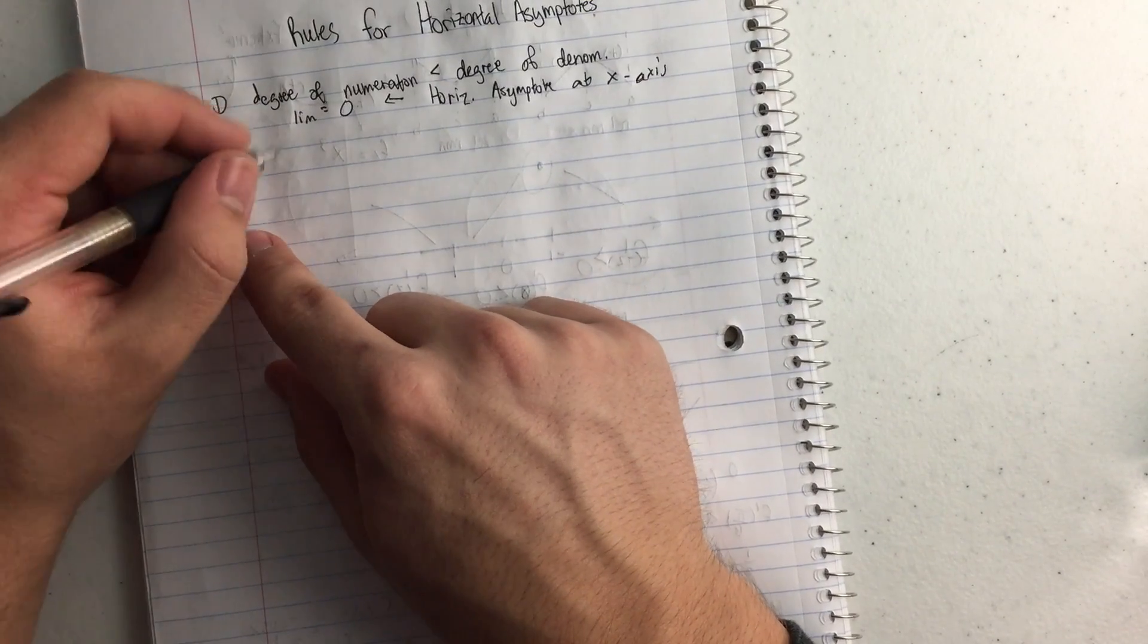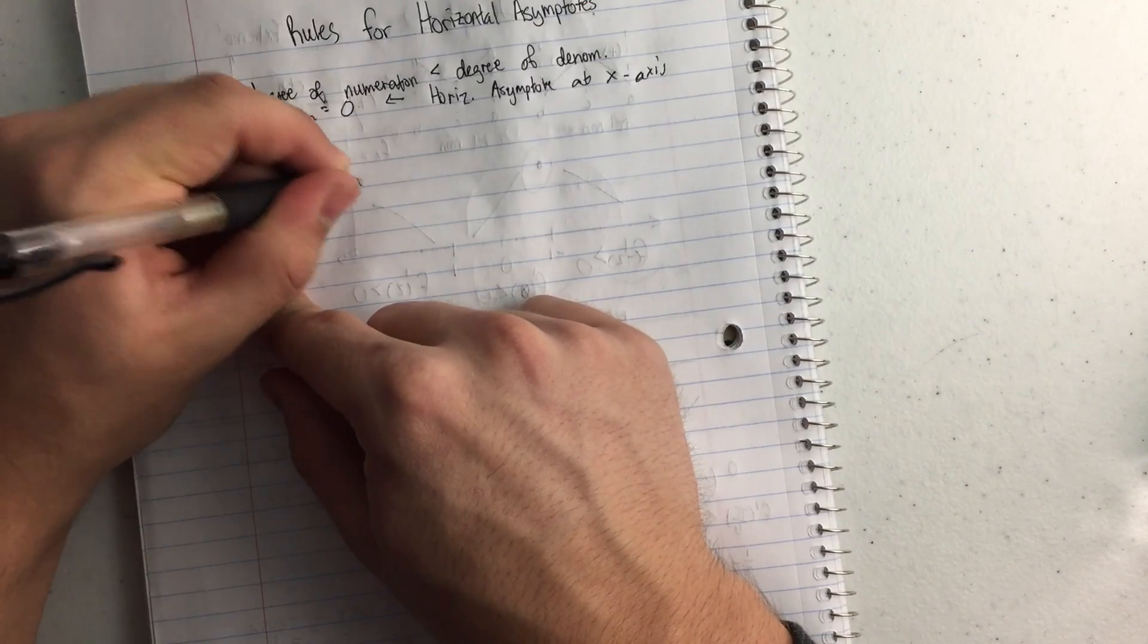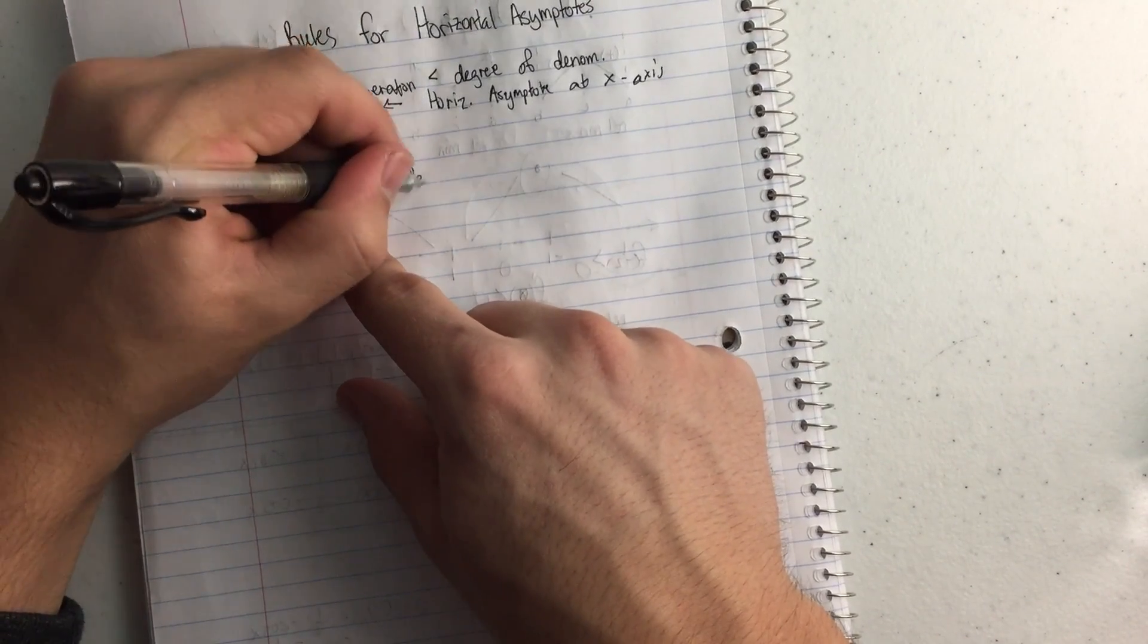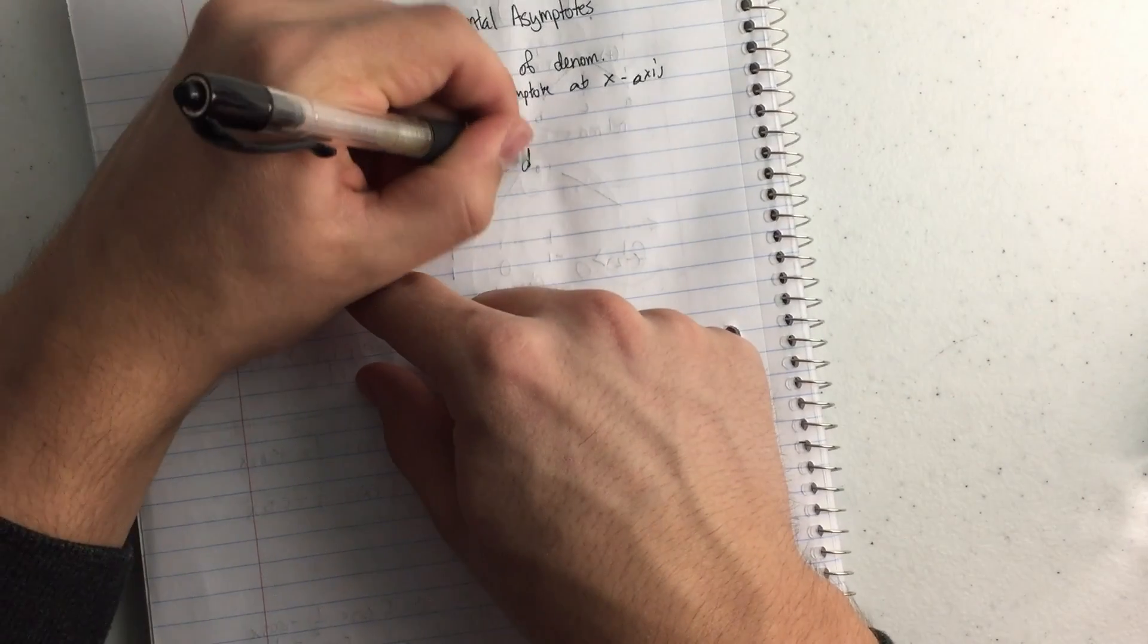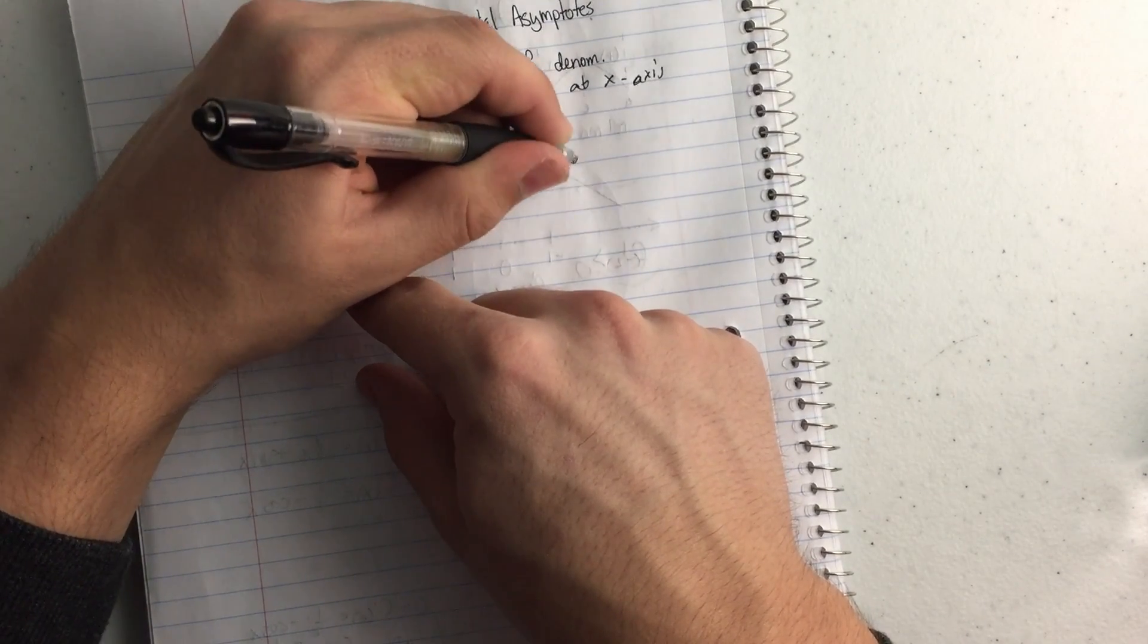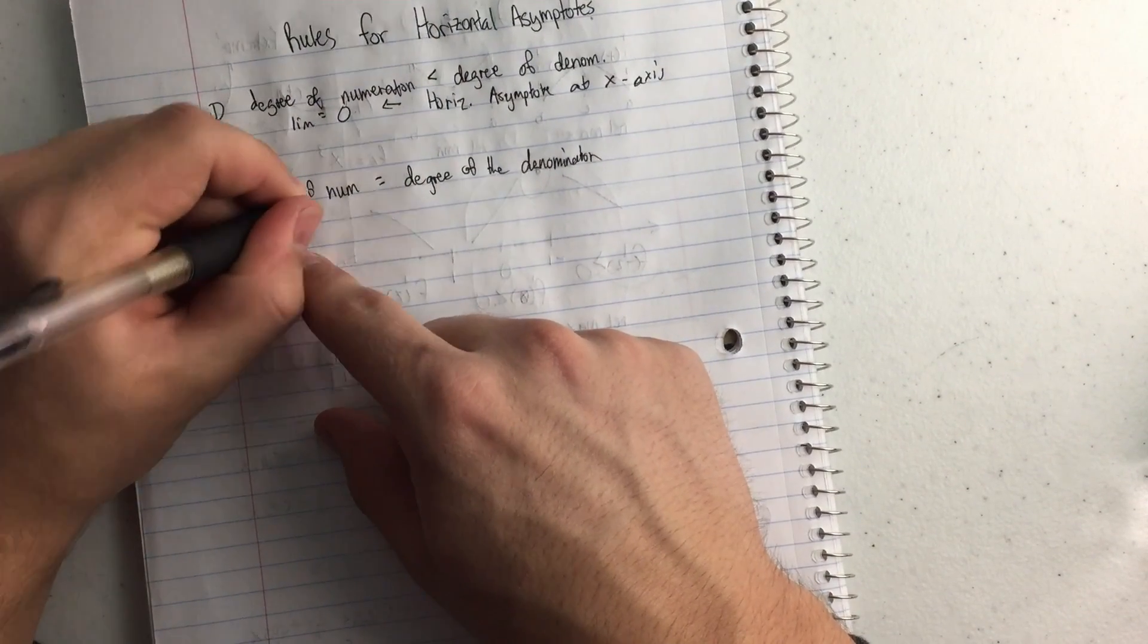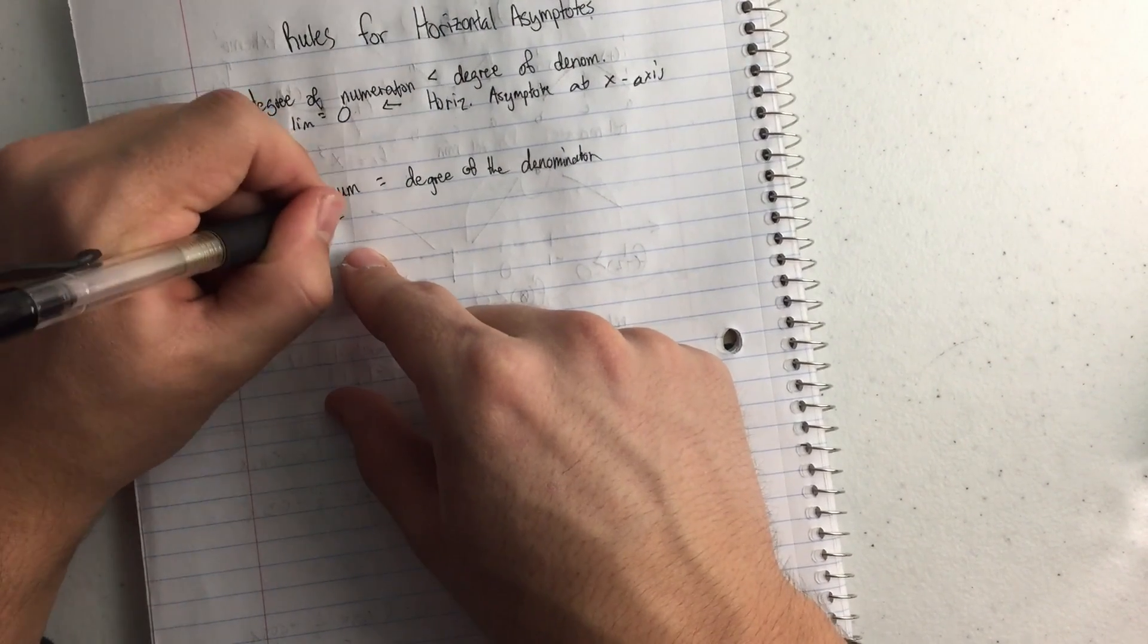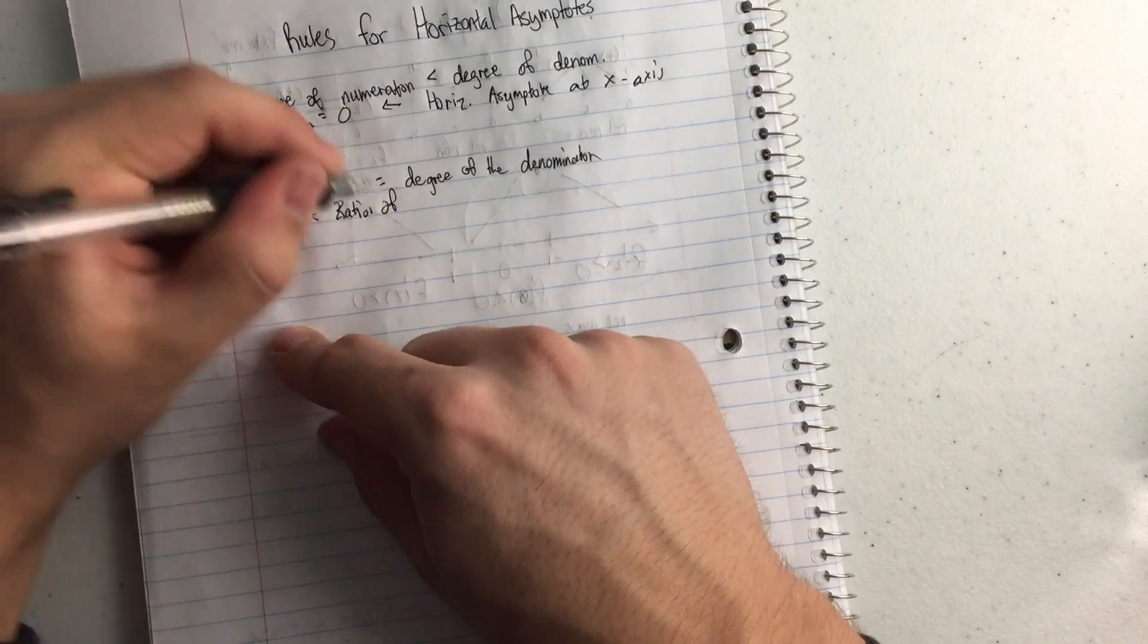The second rule is the degree of the numerator equals the degree of the denominator. And so that means the limit equals the ratio of the leading coefficients.